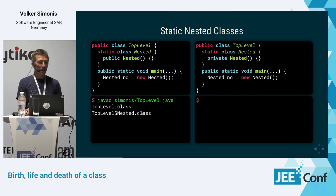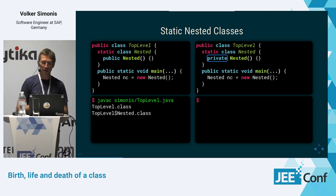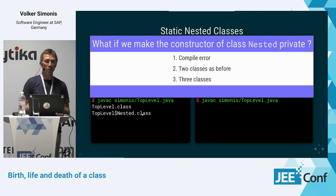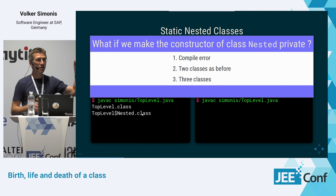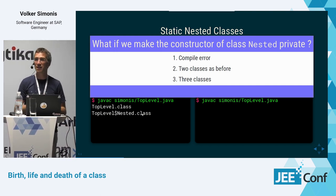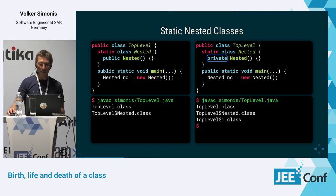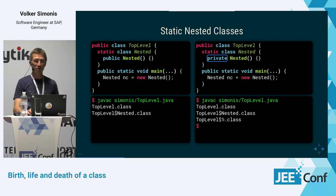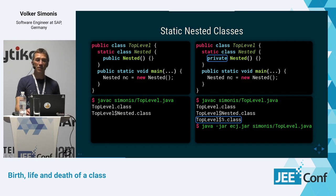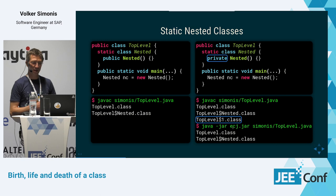What happens when we change the constructor's visibility from public to private? When we compile this with javac we get three class files: the two as before plus a synthetic TopLevel$1.class. However, the Eclipse compiler ECJ goes a different route — if you compile with ECJ (by putting the ecj.jar on the classpath) it only compiles two classes. This appears to be an implementation detail.